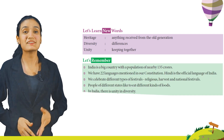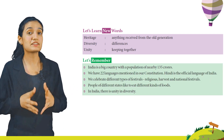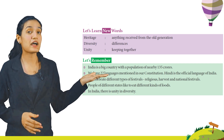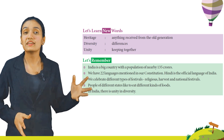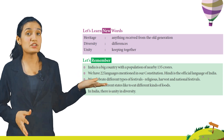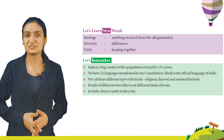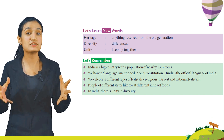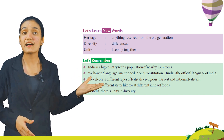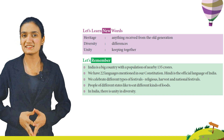Let's remember: India is a big country with a population of nearly 135 crores. We have 22 languages mentioned in our constitution, and Hindi is the official language of India. We celebrate different types of festivals — religious, harvest, and national. People of different states like to eat different kinds of food. In India, there is unity in diversity. I hope you all liked this session. We will meet in the next class. Till then, bye-bye.